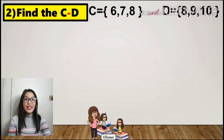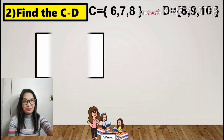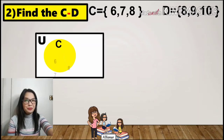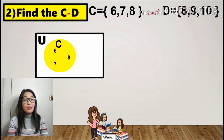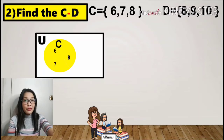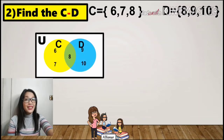For number 2, find the difference between C and D. We have our universal set. Set C has the elements 6, 7, and 8, and set D has the elements 8, 9, and 10. Notice that 8 is also an element of D, and therefore 8 will be the intersection, from what we studied before about the intersection of sets.